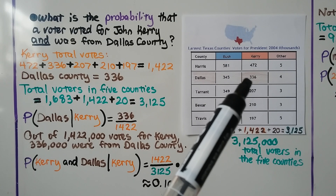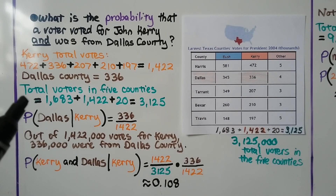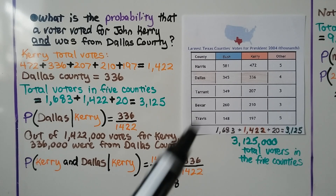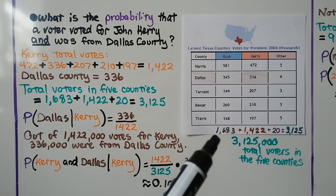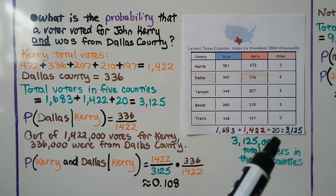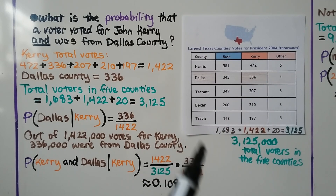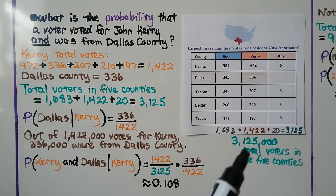Dallas County for Kerry was 336. Then we total the voters in all five counties. All the voters for Bush were 1,683. We add the total for Kerry, 1,422, and the other total, which comes out to 20, giving us 3,125. Because this is in thousands, it's actually 3,125,000 voters in those five counties.